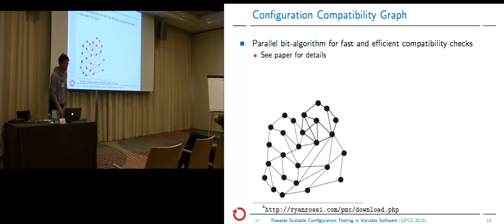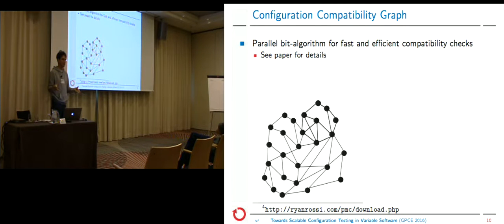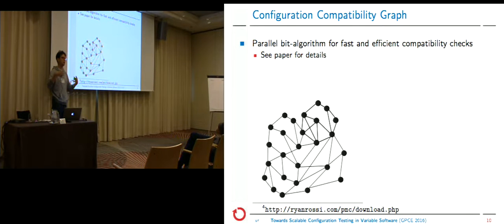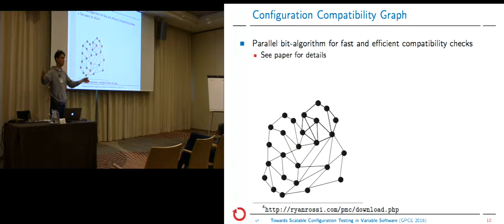The configuration compatibility graph was, from an engineering perspective, a first bottleneck. We have to compare all configurations, and configurations are represented as text strings, which is quite expensive in terms of memory. We needed many optimizations and came up with a parallel bit algorithm to build the graph and compare configurations. The key idea: kconfig configurations can only have three values, so we can pack 21 configuration options in one 64-bit word, compressing the memory footprint and applying bit operations, which are very efficient for the CPU.